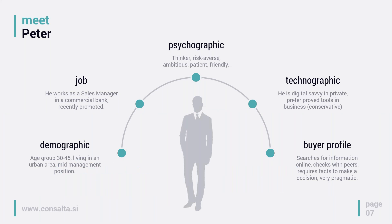I titled this 'Meet Peter' — a person with characteristics that could be interesting for marketers, whether they want to target him in private or business life. Peter is in the age group of 30 to 45, living in an urban area. He has a mid-management position, works as a sales manager in a commercial bank, and was recently promoted. Psychographically, he's a thinker — risk averse, ambitious, patient, and friendly to co-workers and clients.